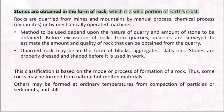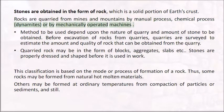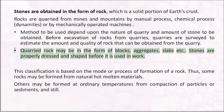Stones are obtained in the form of rock, which is a solid portion of the earth's crust. Rocks are quarried from mines and mountains by manual process, chemical process, dynamites, or by mechanically operated machines. The method to be used depends upon the nature of the quarry and the amount of stone to be obtained. Quarried rock may be in the form of blocks, aggregates, slabs, etc.